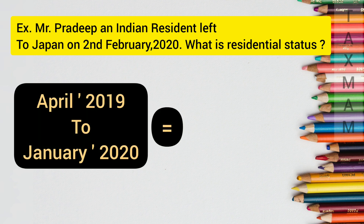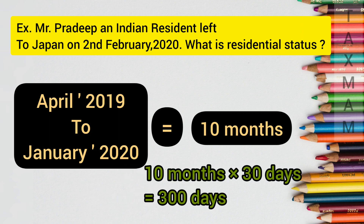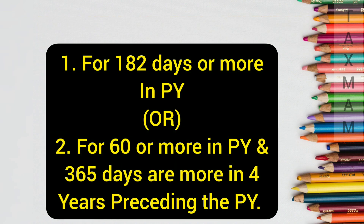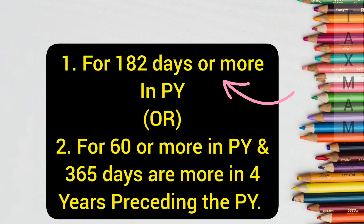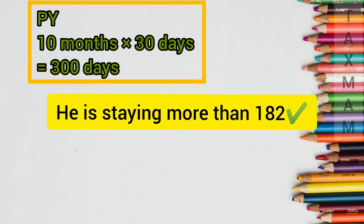He left to Japan from India on 2nd February 2020, which means from before that date he was staying in India only. Approximately, he was in India for April, May, June, July, August, September, October, November, December, and January — and he left on February 2nd. That means approximately 10 months, which is around 300 days he was in India. The first basic condition requires 182 days or more in the previous year — this condition is satisfied.